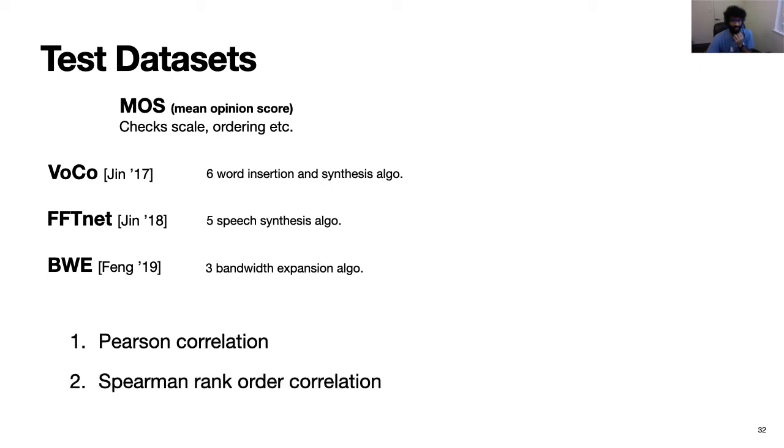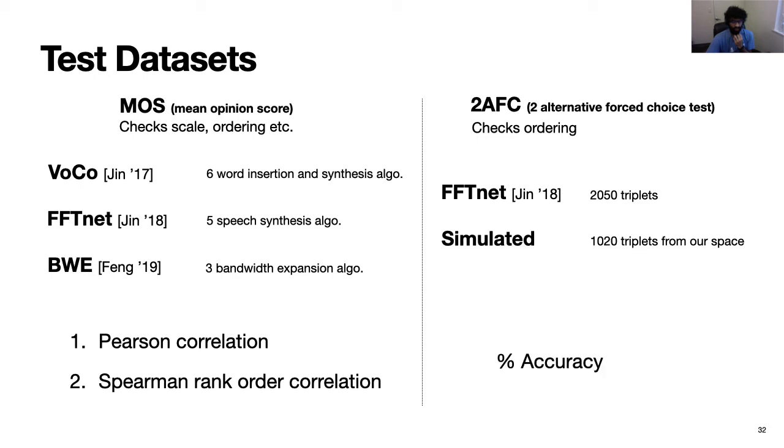So we measure performance using correlation analysis, especially Pearson and Spearman's correlation between the distance from our metric and the MOS score. As an extension, we also check for 2AFC accuracy, where 2AFC stands for 2 alternative forced choice test, in which we play a reference and 2 noisy clips and ask which one is closer to the reference. This metric checks for ordering, for example, in cases where A is closer to C than B is to C, whereas the MOS test checks for both scale and ordering, for example, how much is A closer to C. So we take already existing datasets and convert them into a triplet format, and we finally measure accuracy using percentage accuracy as a metric.